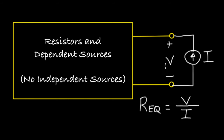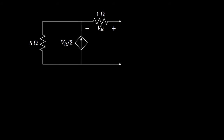Let's illustrate this method with a couple of examples of circuits that contain resistors and dependent sources. We have a circuit with a 5-ohm resistor in parallel with a dependent current source that provides a current that is half of the voltage across a 1-ohm resistor. We'd like to determine the equivalent resistance looking to the left of these two nodes. We'll do this by attaching a known current source to the terminals — we could set this current to any value other than zero, so let's use 1 amp.